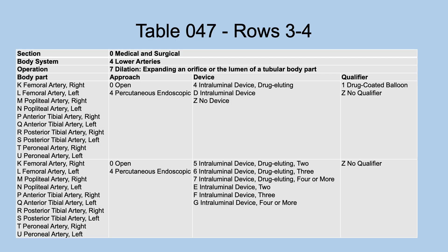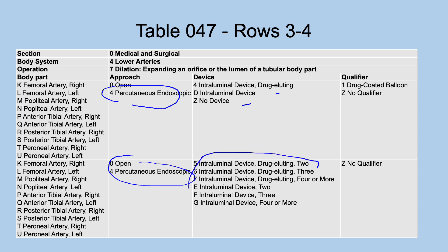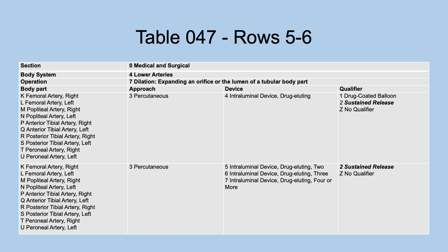Still on table 047, dilation, lower arteries — new rows 3 and 4 also use the deleted body parts from the first row. Note the approach value 3, percutaneous, is not used here; this part is new. Row 3 has drug-eluting, intraluminal, and no device — without the numbers. Row 4 does have those numbers. Row 4 also has the drug-coated balloon and row 3 does not. Rows 5 and 6 introduce a new qualifier: sustained release, meaning the drug-eluting device releases the drug over time to maintain a steady level in the body. These rows use only the percutaneous approach.